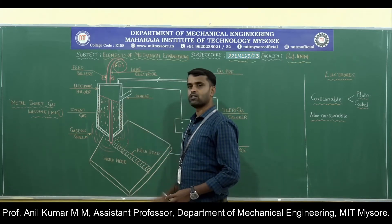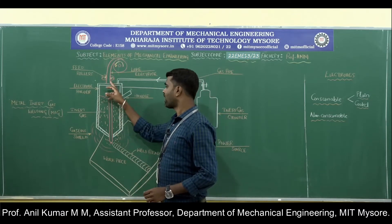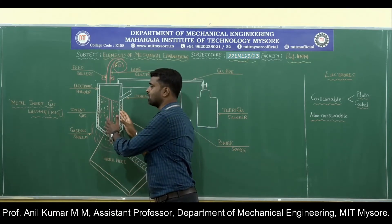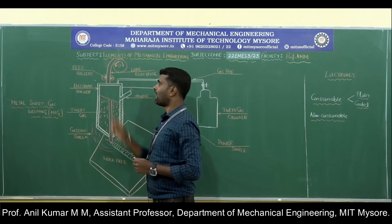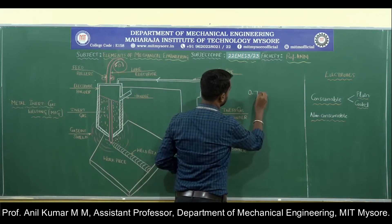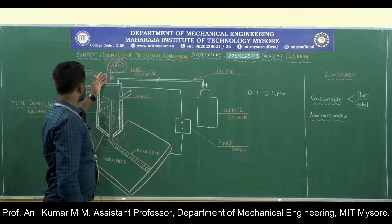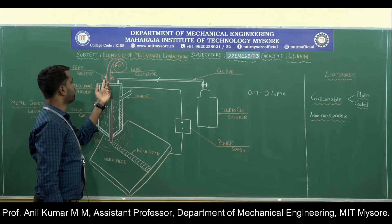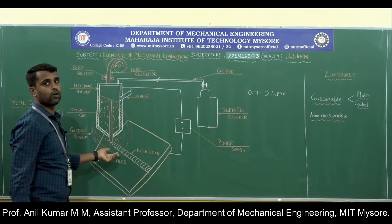This process consists of a welding torch where the uncoated wire electrode is fixed into the electrode holder. The diameter of the wire electrode ranges from 0.7 to 2.4 mm. This wire electrode is continuously fed at a constant rate with the help of a feed roller, continuously supplying electrode to the welding area.